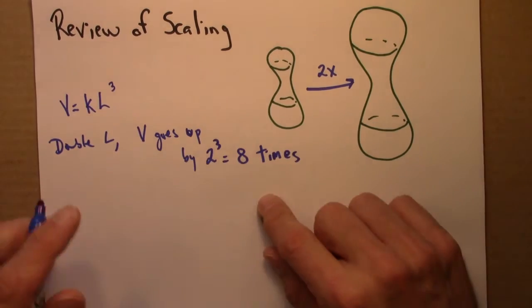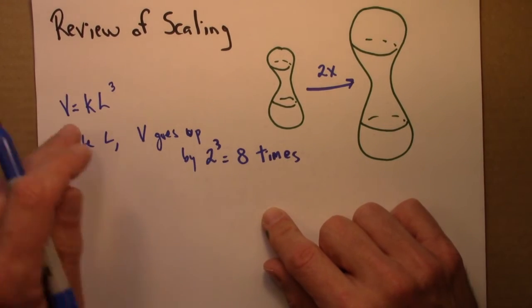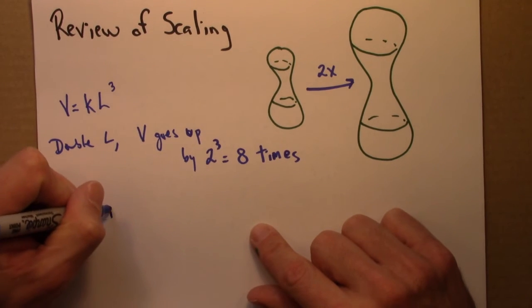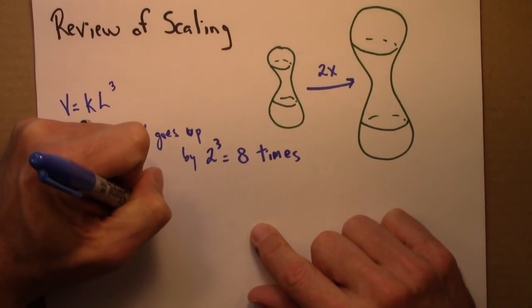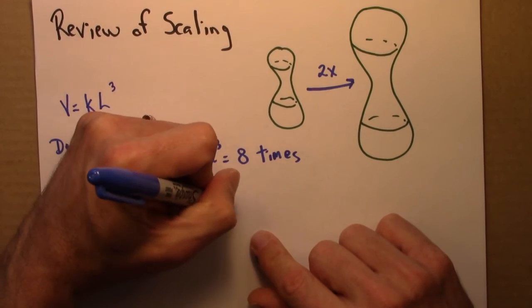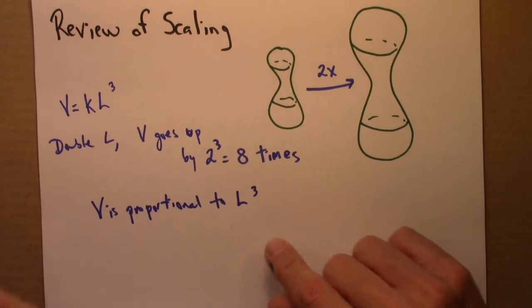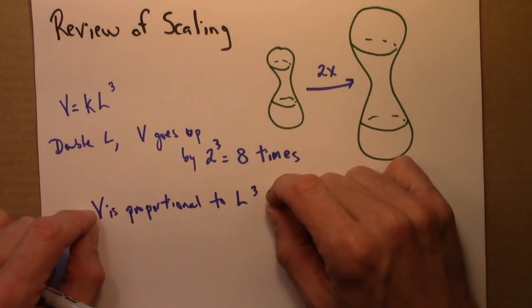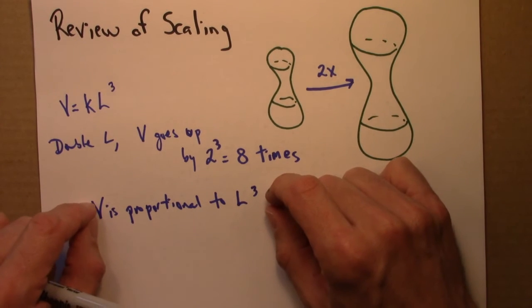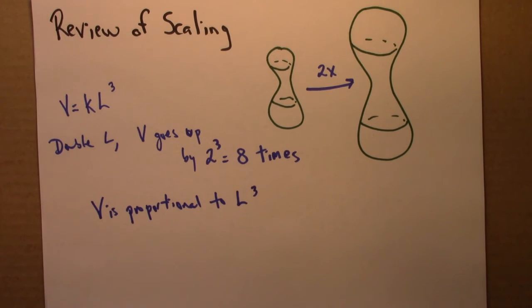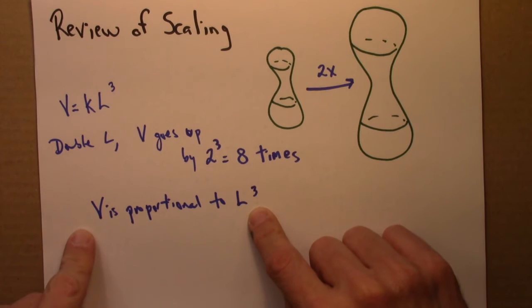And this relationship here, I might write out by saying that V is proportional to L cubed. So what that means is that they rise and fall in proportion to each other. If L cubed doubles, V will double. If V goes down by a third, L cubed must go down by a third. So that these two quantities are in proportion to each other.